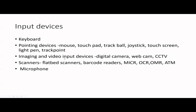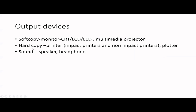Then we discuss imaging and video input devices — how we can give image or video related inputs — from digital camera, web camera, and CCTV. Then come scanners, used when we have a printed document and want to convert it to a digital image. A flatbed scanner is one type, and we have barcode readers, MICR, OCR, OMR — these kinds of scanners. I will be discussing these in a later question. Another input device is the microphone, to give sound input.